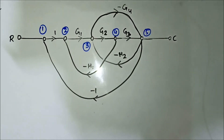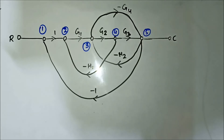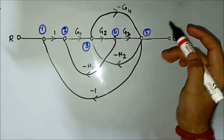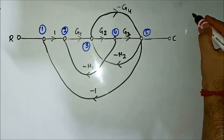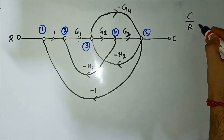Hello friends, we'll continue with our discussion on signal flow graphs. Here is another signal flow graph, and we have to find out the transfer function. We'll use the usual Mason's Gain Formula approach.